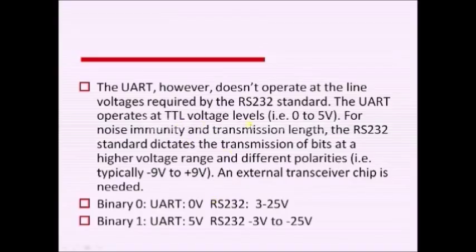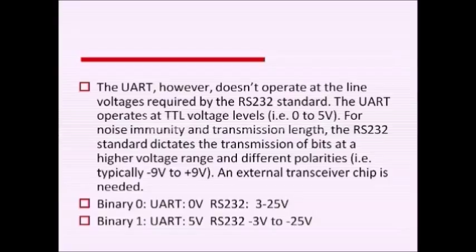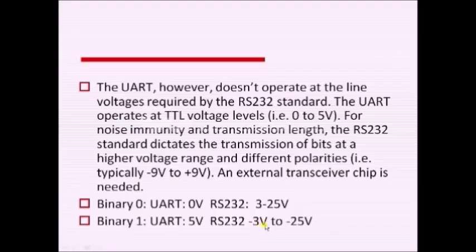UART supports TTL voltage levels of 0 to 5 volts. However, if you want to increase the length of communication, noise gets introduced into the channels. To reduce noise, we use a protocol called RS232. RS232 represents data bits with higher voltage levels, so the length of transmission can be increased. In UART, binary 0 is represented with 0 volts, whereas RS232 represents it with 3 to 25 volts. Binary 1 is represented by 5 volts in UART, while RS232 represents binary 1 with minus 3 to minus 25 volts.